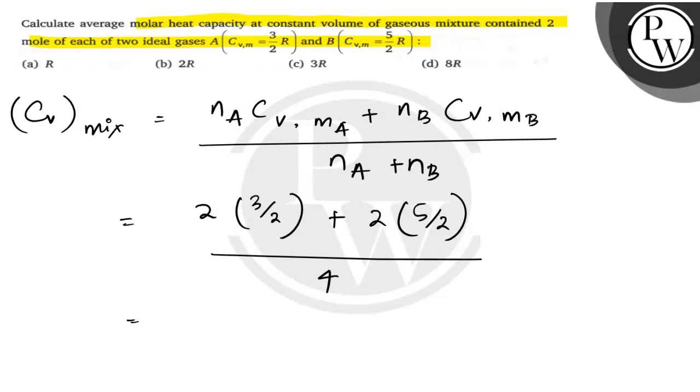On simplifying this, we will be getting 2R. 2R is given in option B.